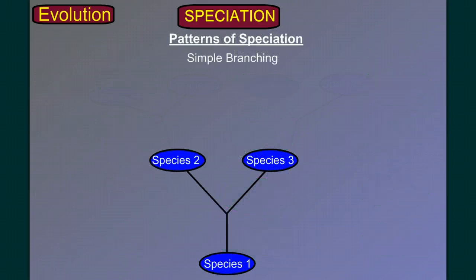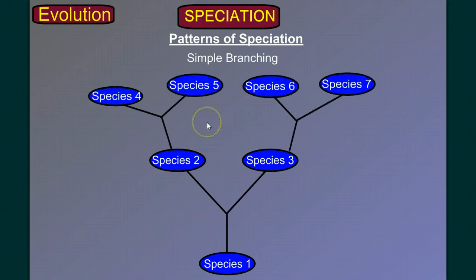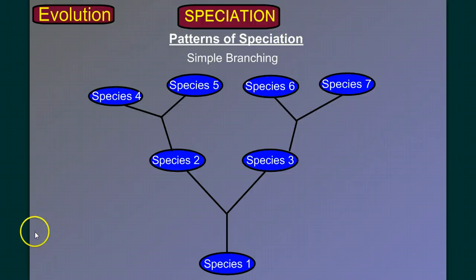How about the pattern of speciation? We can have a simple branching pattern where one species branches into two, and those species might branch into other species over time. That branching pattern happens a lot. But a very common pattern of speciation I want to look at requires a little more work.